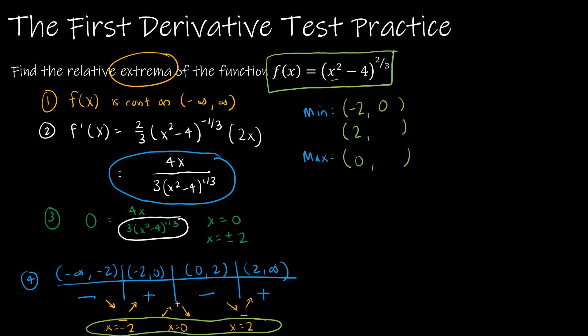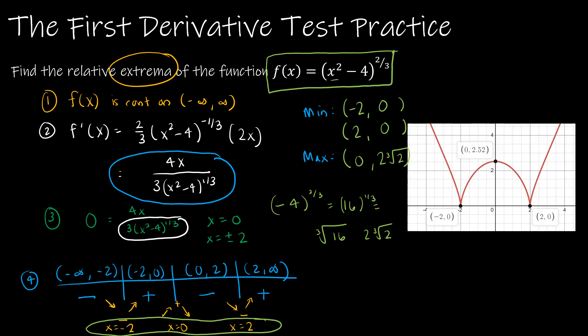Plugging in x = −2: (−2)² − 4 = 0, and 0 to the two-thirds power is 0. Same for x = 2: 4 − 4 = 0, to the two-thirds is 0. Plugging in x = 0: 0 − 4 = −4, and (−4)^(2/3) means (−4)² = 16, then the cube root of 16 = 2∛2. So the minimums are at (−2, 0) and (2, 0), and the maximum is at (0, 2∛2), which is approximately (0, 2.52).